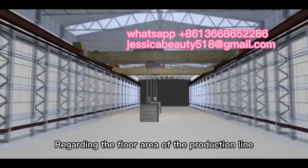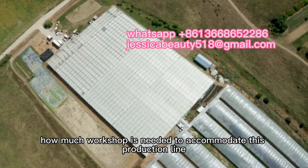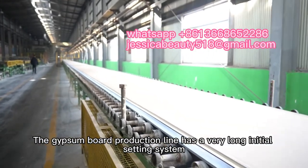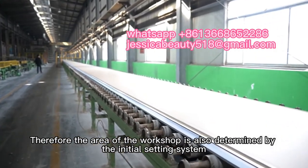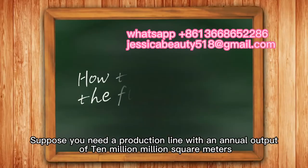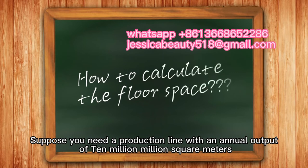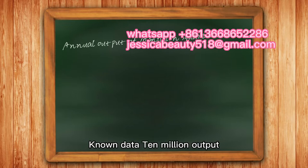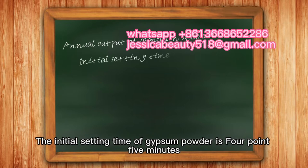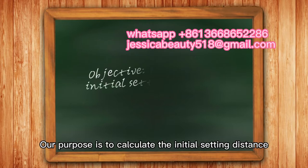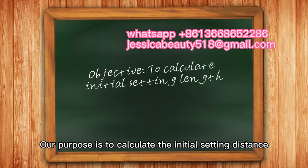How much workshop space is needed to accommodate the production line? The gypsum board production line has a very long initial setting system, so the workshop area is largely determined by it. For example, suppose you need a production line with an annual output of 10 million square meters. The initial setting time of gypsum powder is 4.5 minutes and the width of the gypsum board is 1.2 meters — our goal is to calculate the initial setting distance.